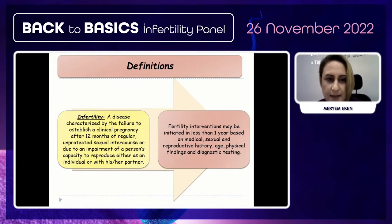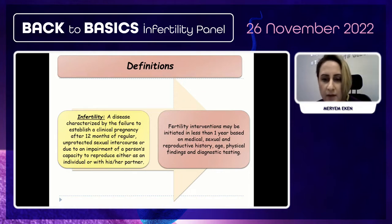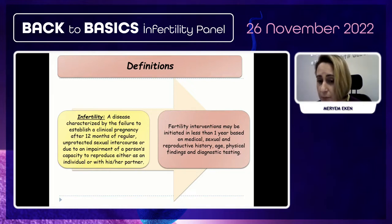Infertility means a disease characterized by the failure to establish a clinical pregnancy after 12 months of regular unprotected sexual intercourse, or due to an impairment of a person's capacity to reproduce, either as an individual or with his or her partner. Fertility intervention may be initiated in less than one year based on medical, sexual, reproductive history, age, physical findings, and diagnostic testing.